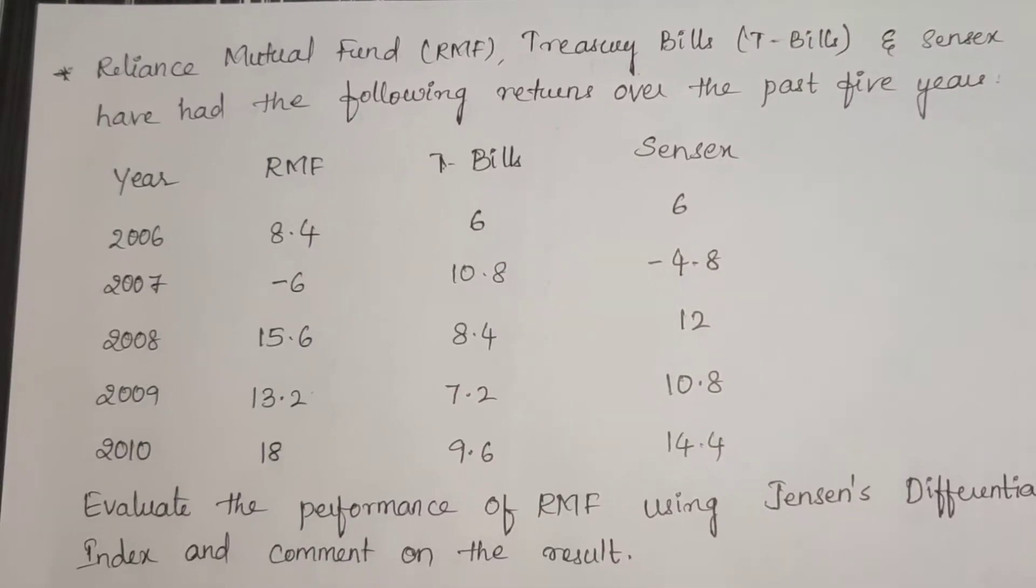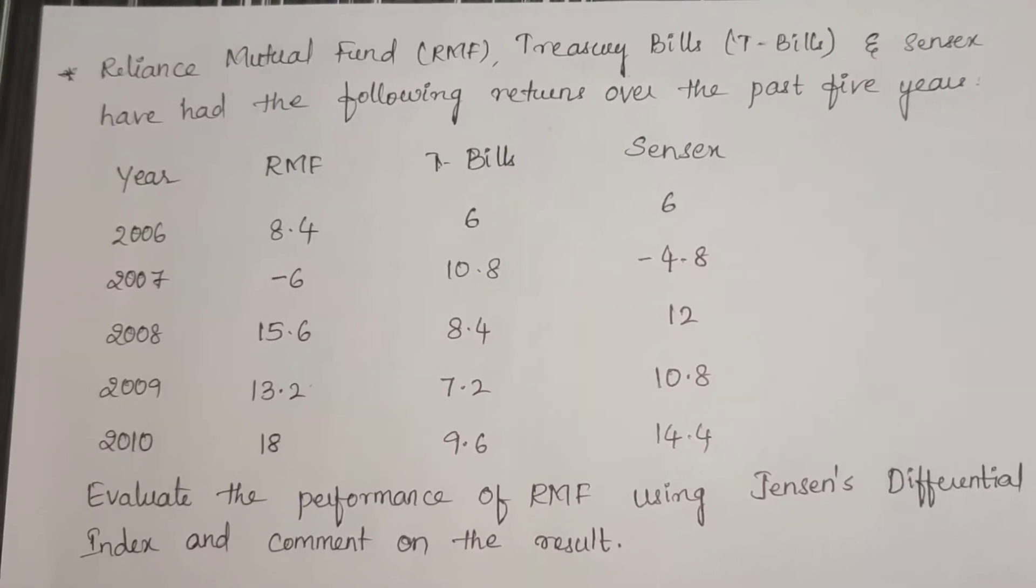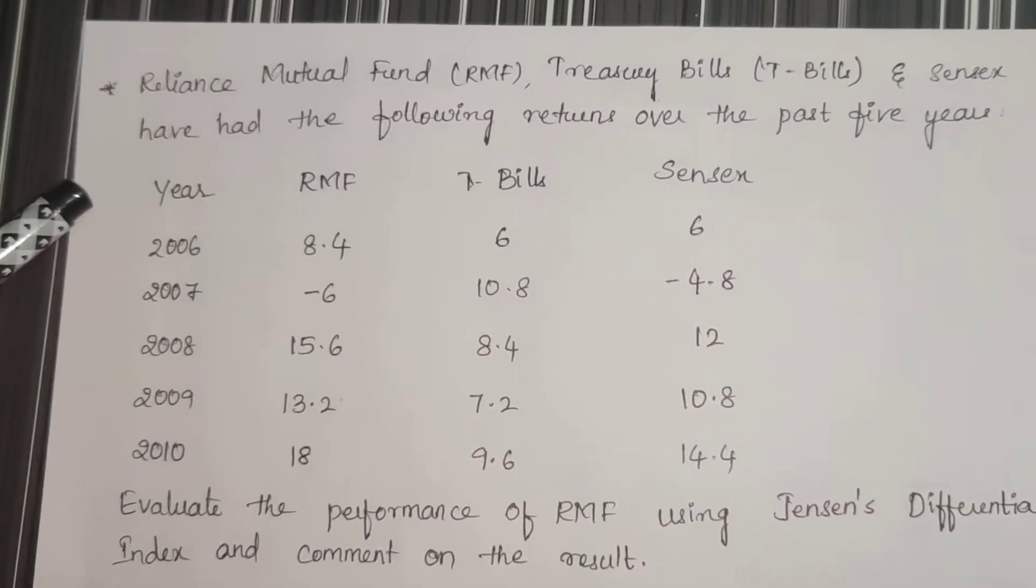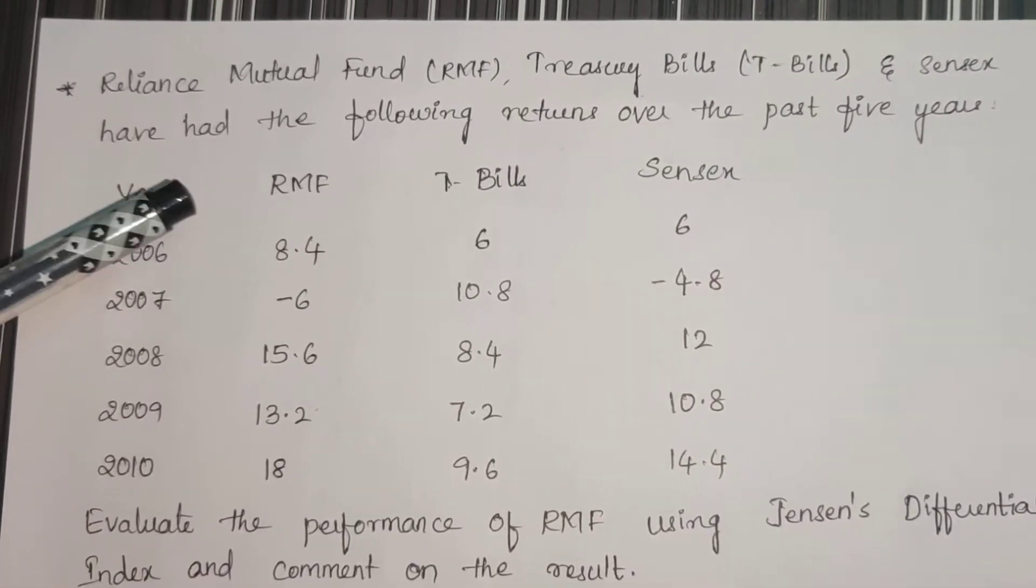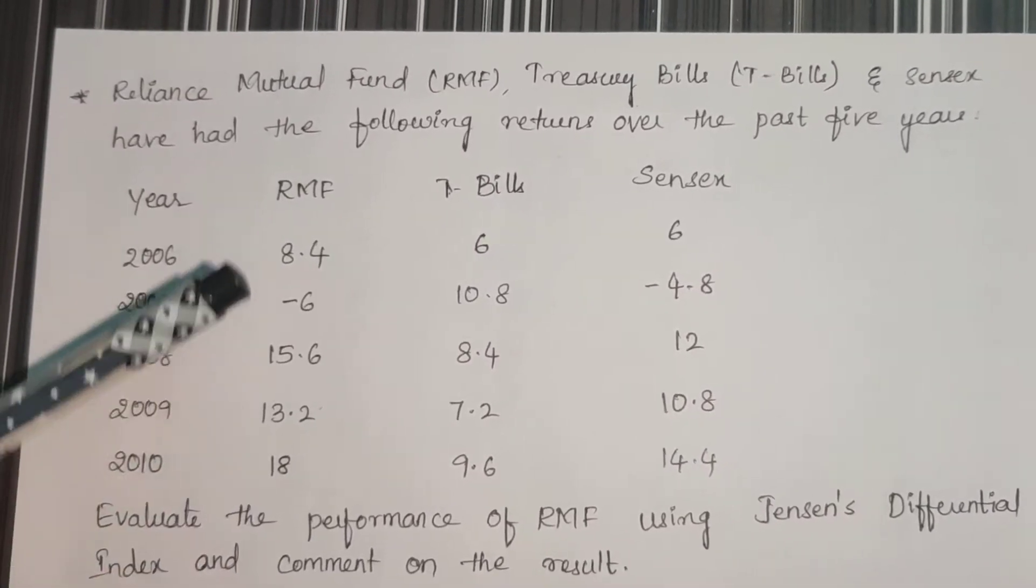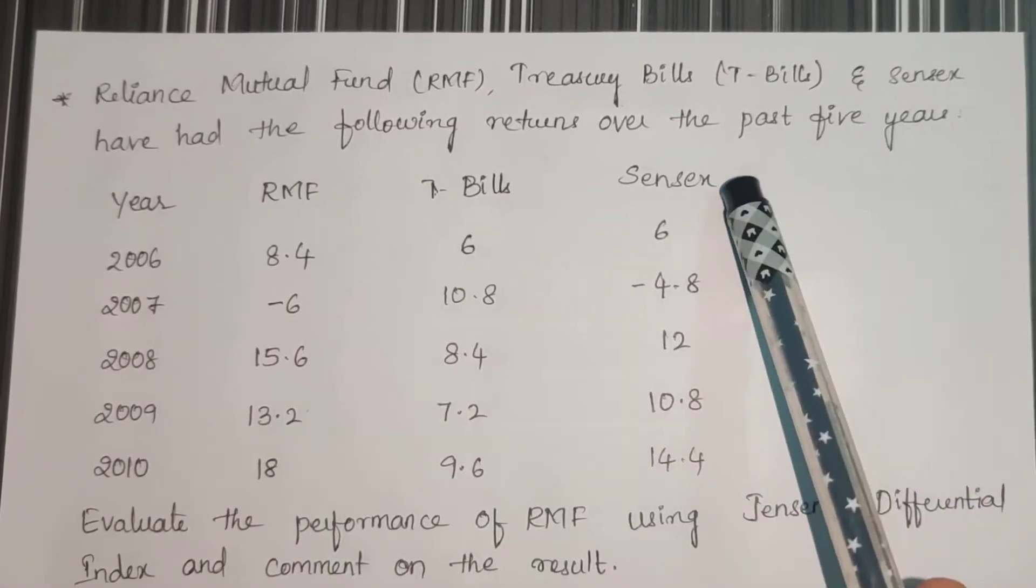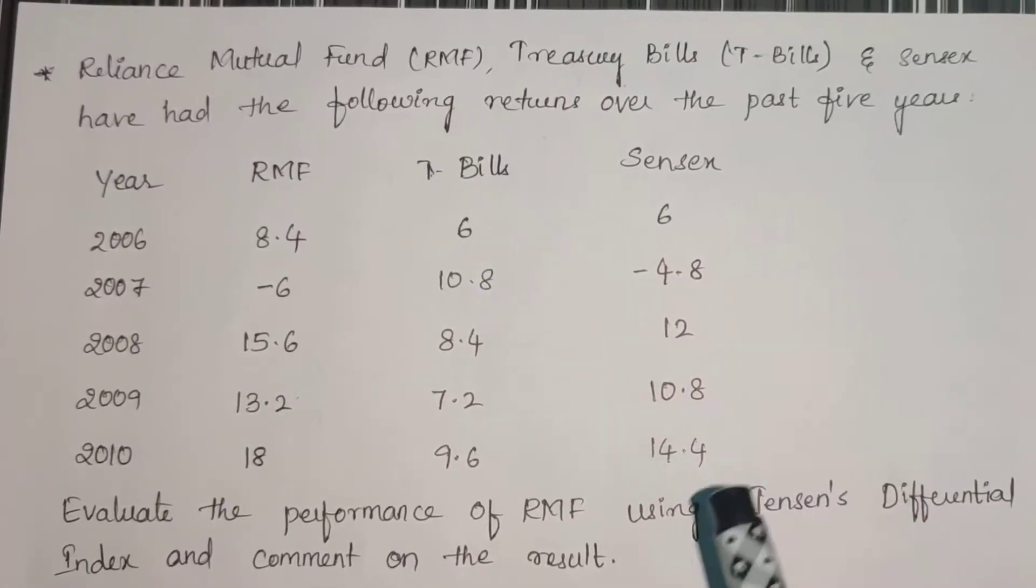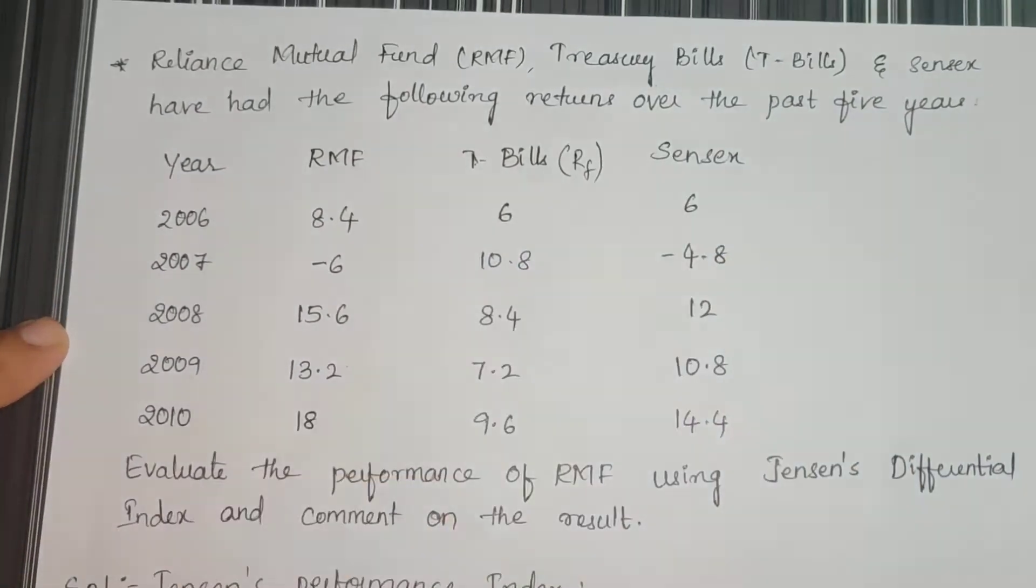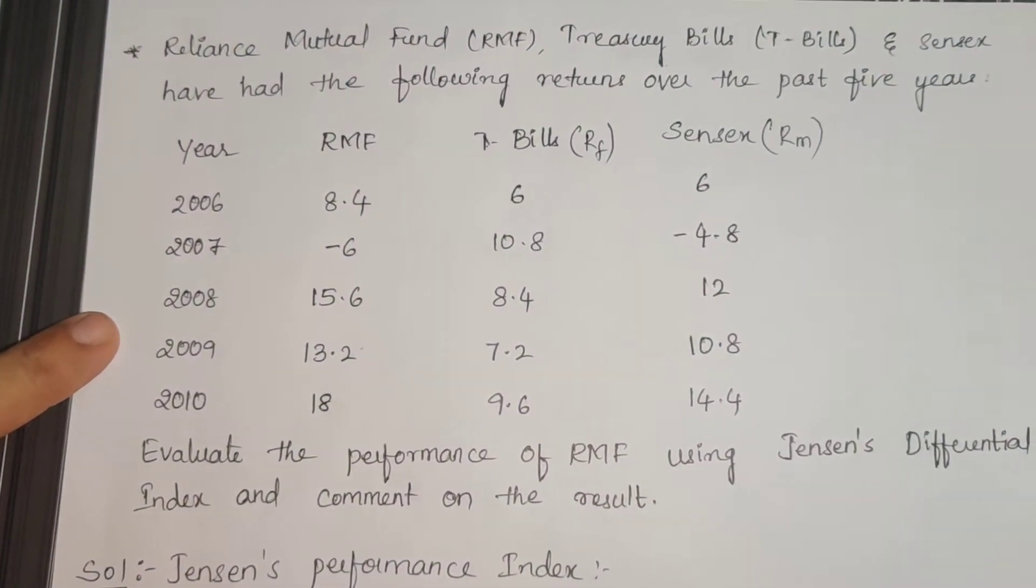Now let's move on to another problem. Reliance Mutual Fund (RMF), Treasury Bills, and Sensex have had the following returns over the past 5 years. From 2006 to 2010, Reliance Mutual Fund returns are given from 8.4 to 18. Treasury Bills returns are provided from 6 to 9.6 for all years, and Sensex, that is market return, from 6 to 14.4. Treasury Bills indicates RF risk-free rate, and Sensex indicates RM return on market.